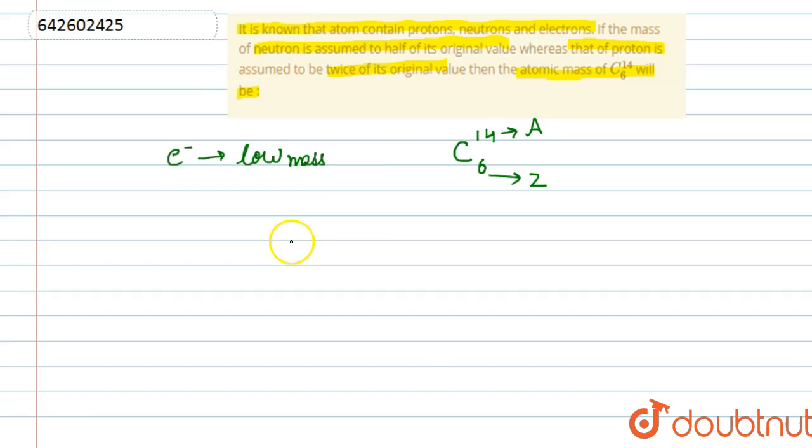Now in this question, we will firstly calculate number of protons and neutrons, number of protons. Z is the number of protons that is atomic number is equals to the number of protons in an electrically neutral atom. That is equal to 6.